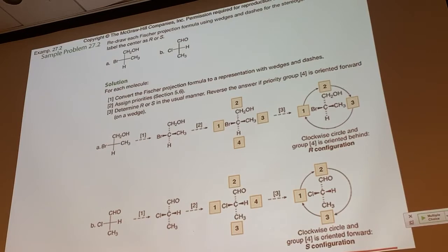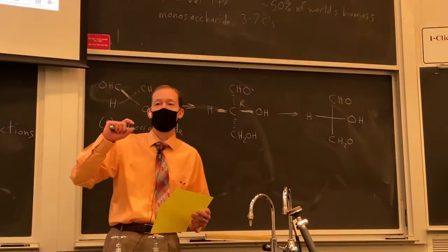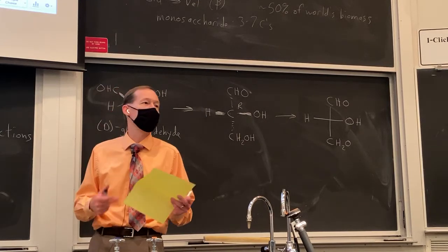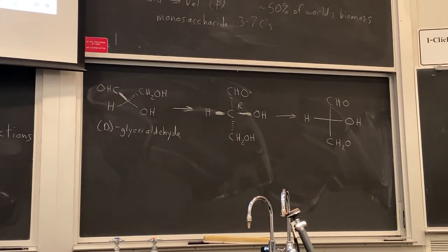One thing to note about Fischer projections is that the Fischer projection structure does not represent reality. When you draw a longer chain molecule in a Fischer projection, you end up with eclipsing bonds, which is not favorable. However, Fischer projections are useful for reasons we'll explain in a moment. This applies to simple three-carbon carbohydrates — what about glucose, which has six carbons?